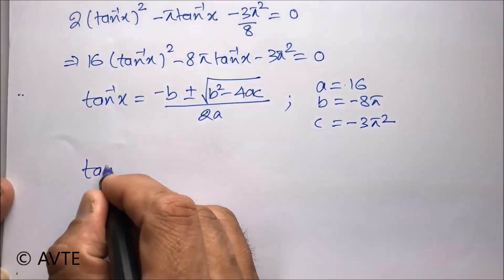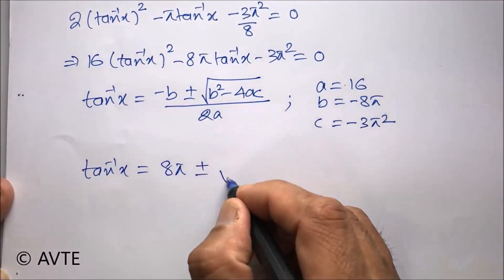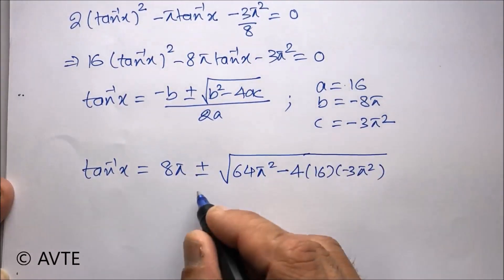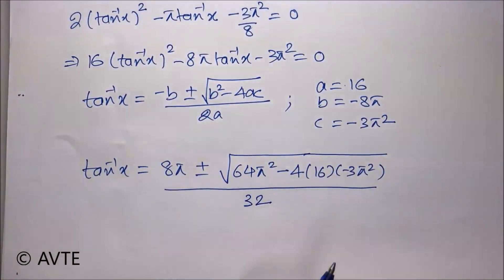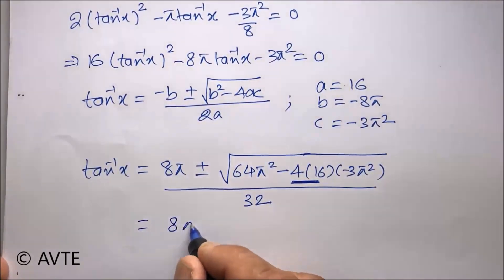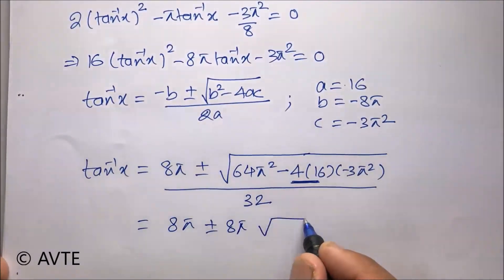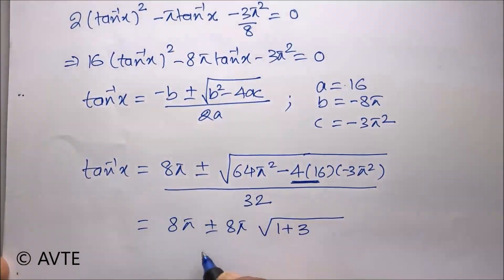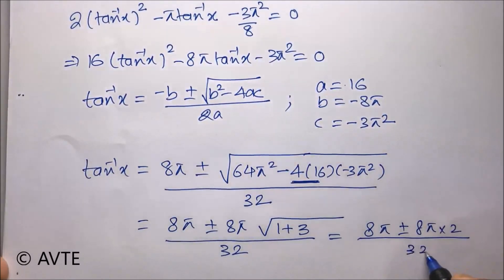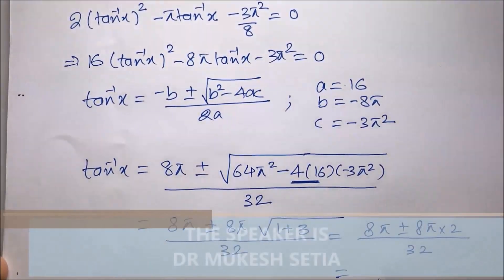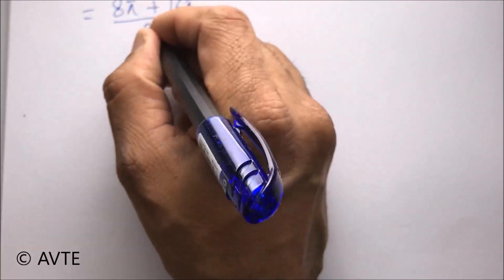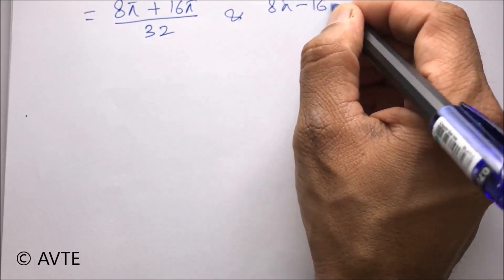By putting these values into the discriminant formula, we get tan inverse of x equal to the result divided by 32. You can do smart work by taking 64 common with pi squared, and you will be left with a simplified expression. So we have two cases: 8 pi plus 16 pi divided by 32, and 8 pi minus 16 pi divided by 32.